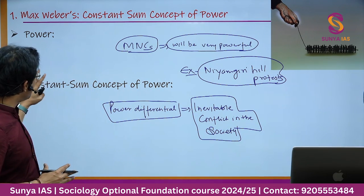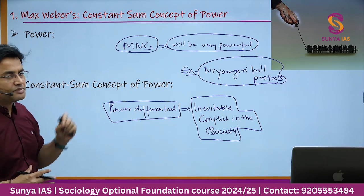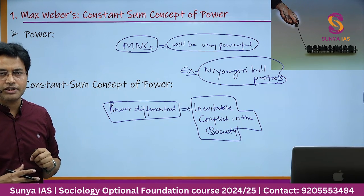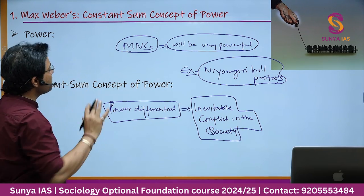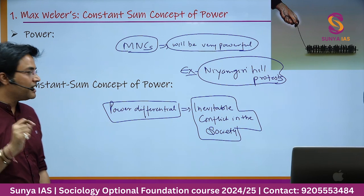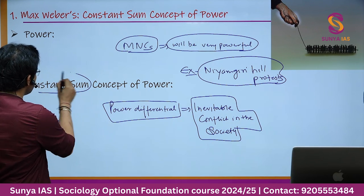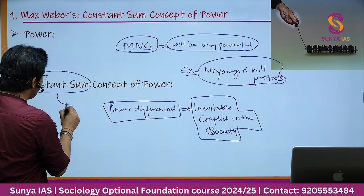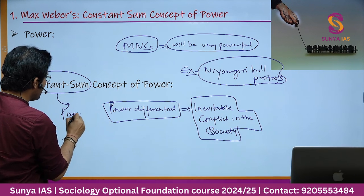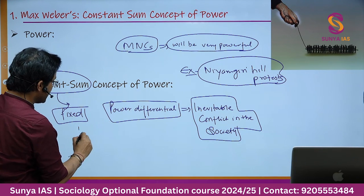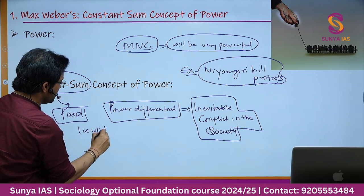This is about the Max Weber concept of power. Remember: when we say constant sum, it means power is fixed — it cannot be changed. If it is 100 units, it will remain 100 units only.